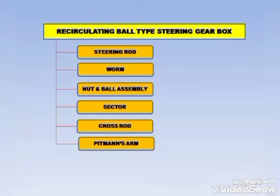What is the recirculating ball type steering gear box? The main parts are the steering rod, worm, nut and ball assembly, sector, crossroad, and pitman arm. These are the very important parts of a recirculating ball type steering gear box.